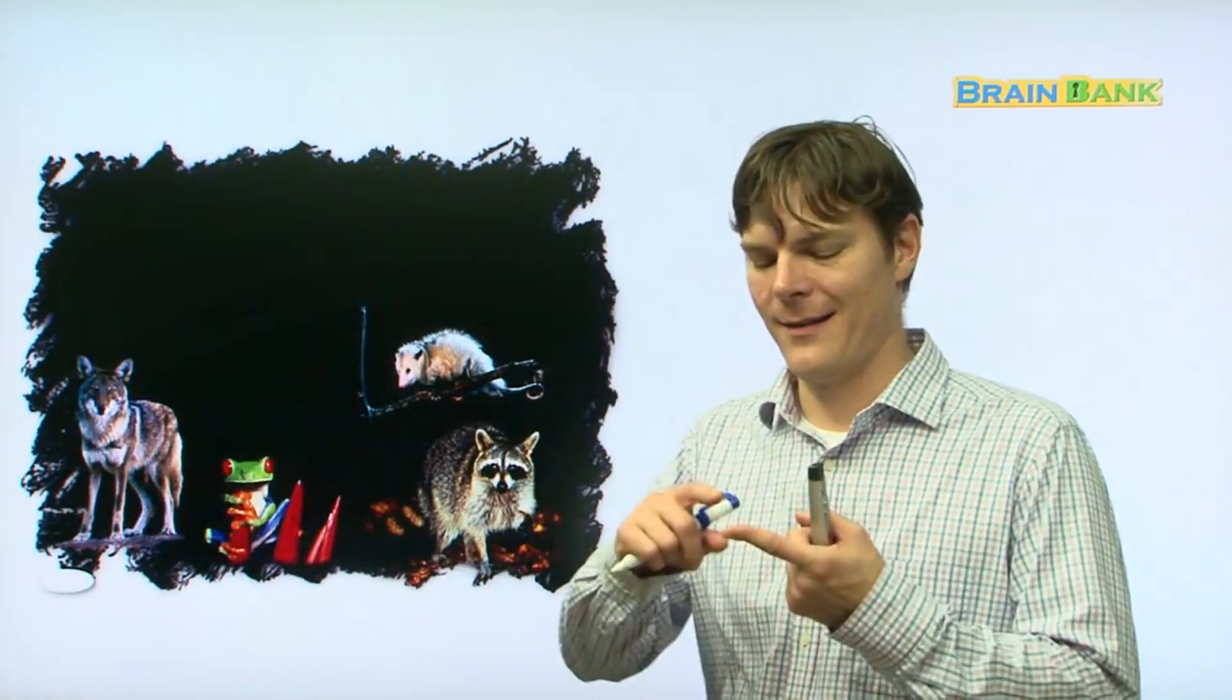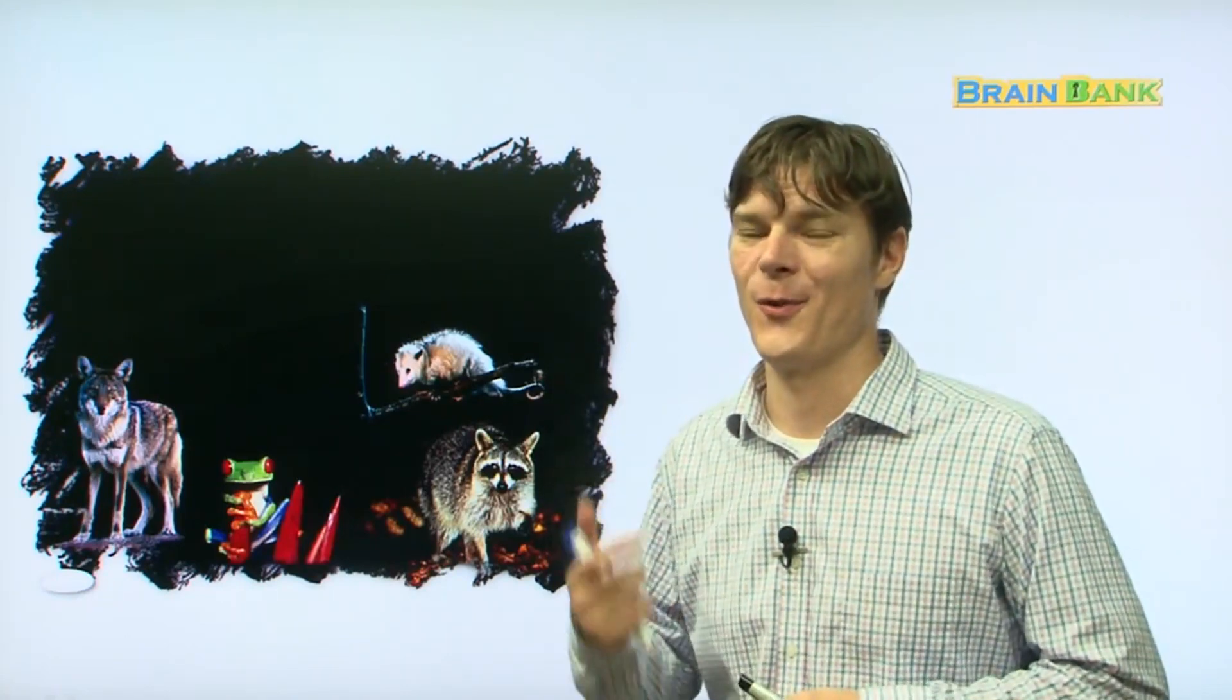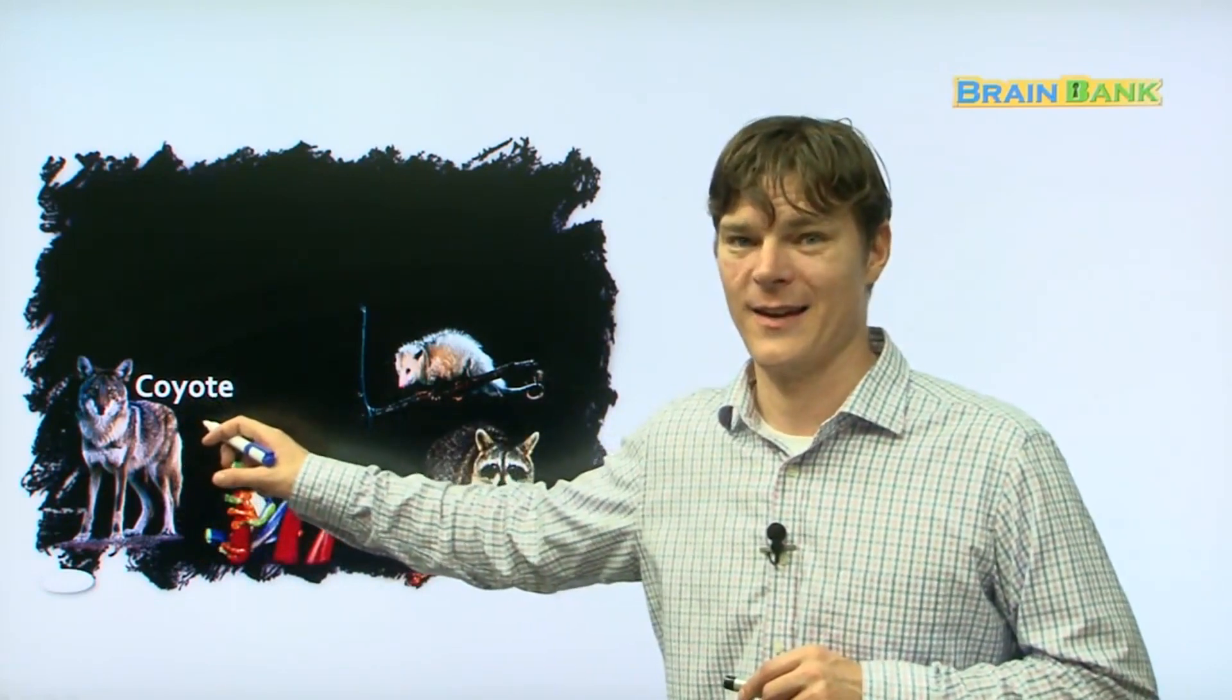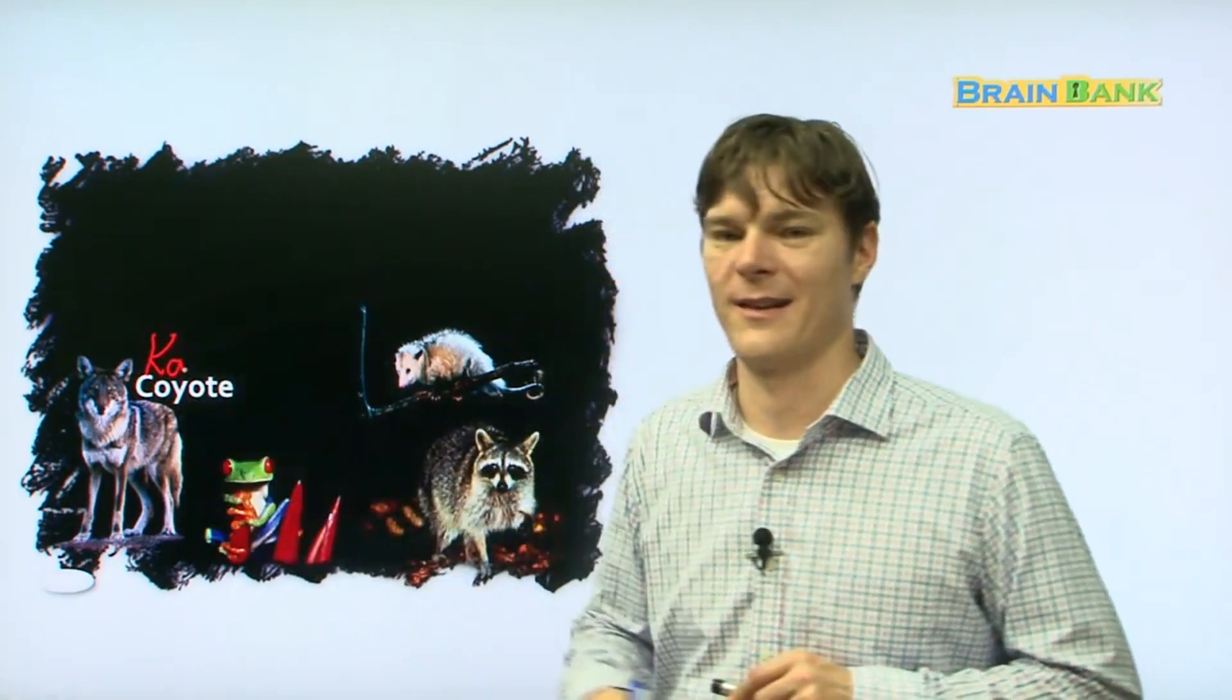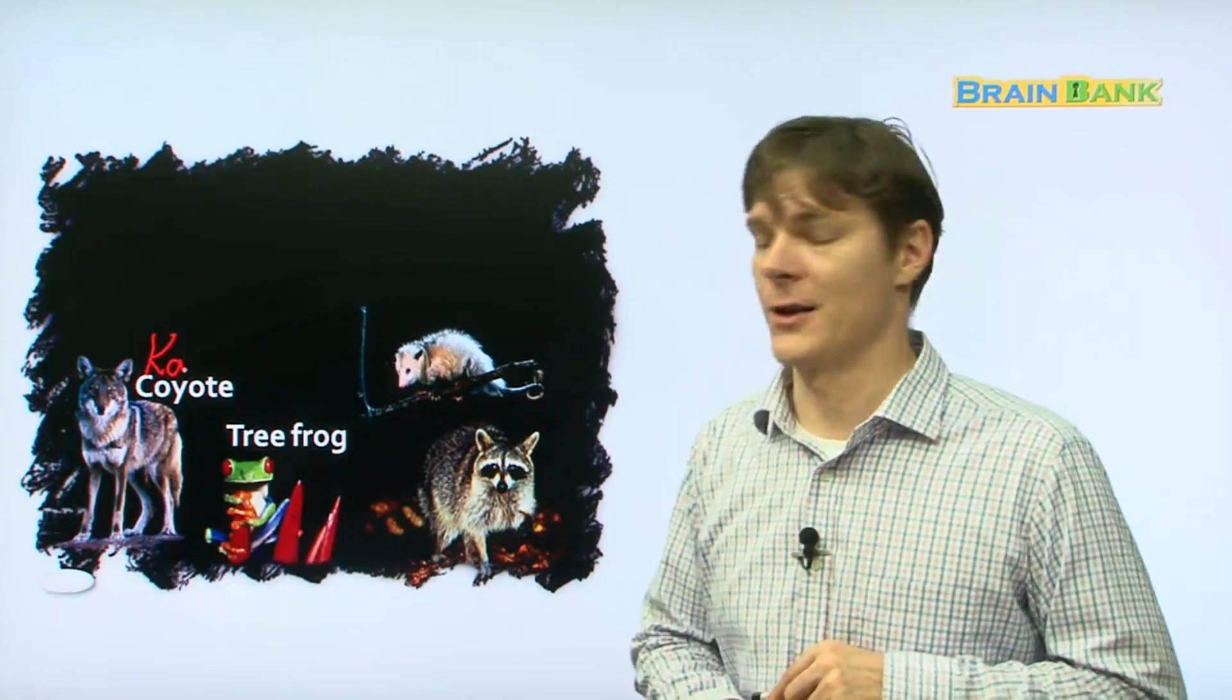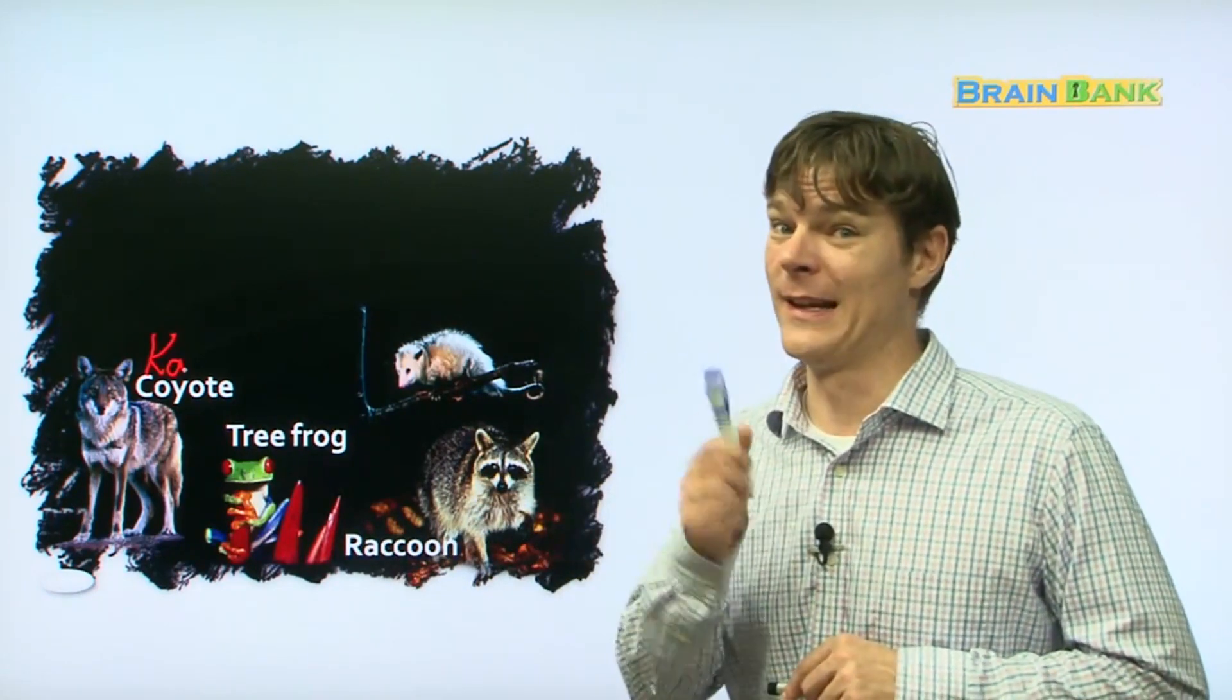Now, we are going to learn about some more animals that can also see very well in the dark. Here we have a coyote. And the coyote is sort of like a wolf. Then we have a tree frog. A tree frog can also see very well in the dark. Then we have a raccoon. This guy can see really well in the dark.